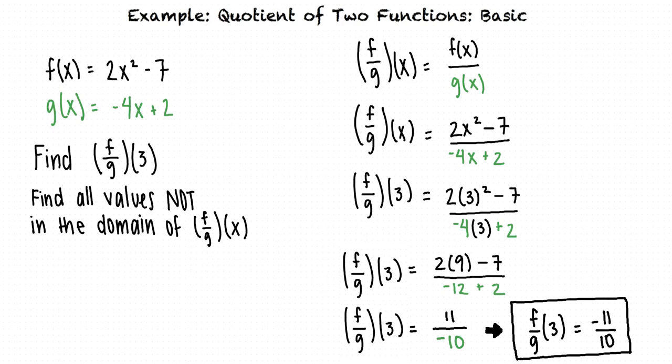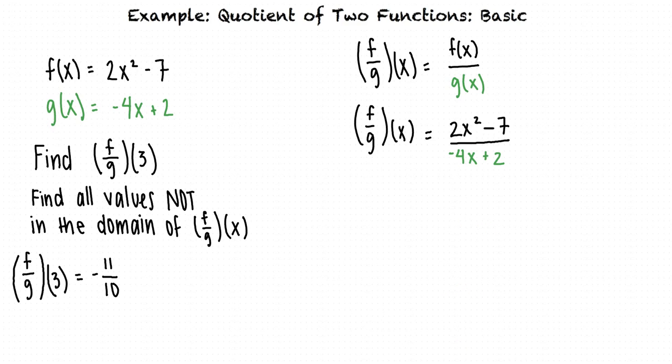Now we must find all values that are not in the domain of f divided by g of x. The domain contains numbers that are in both the domain of f of x and the domain of g of x. Additionally, we must exclude any numbers x for which the function in the denominator, g of x equals negative 4x plus 2, is 0.